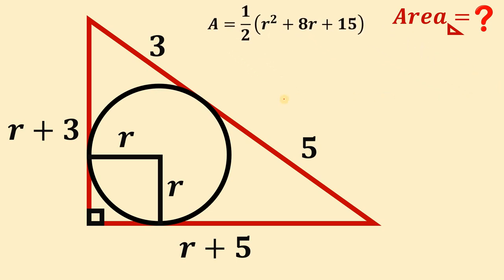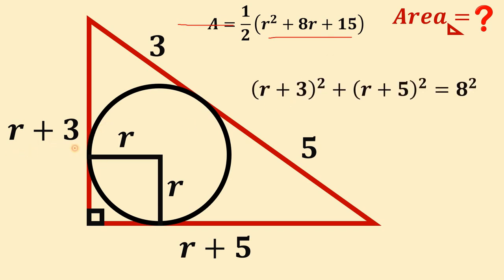To get the value of the expression R squared plus 8R plus 15, we will use the Pythagorean theorem. We have A squared, where A represents (R plus 3) — one leg — and the other leg is (R plus 5). The hypotenuse equals 8, because 3 plus 5 equals 8.